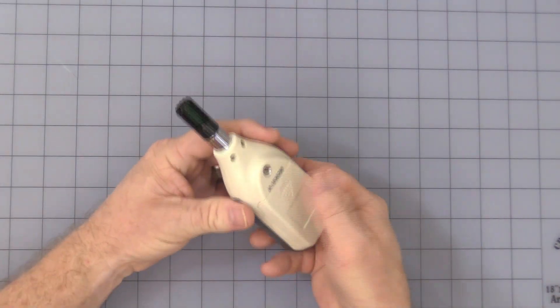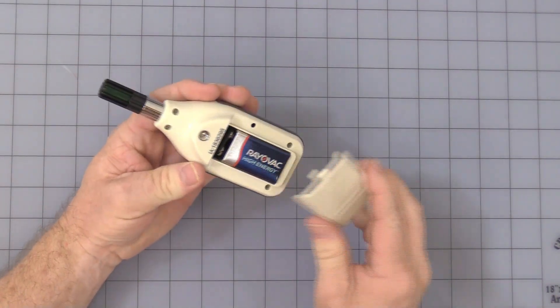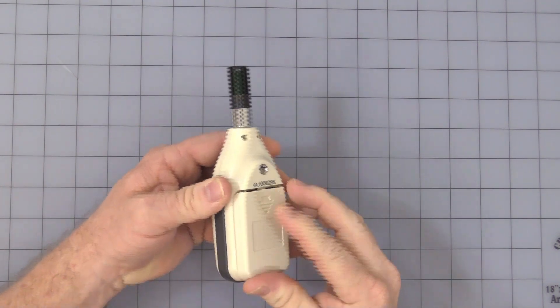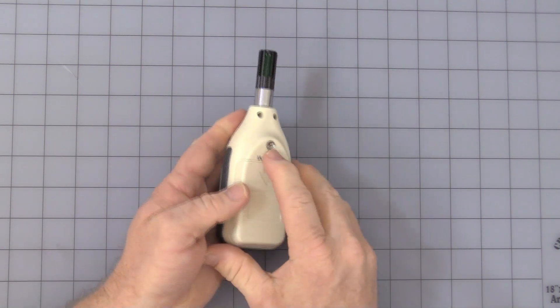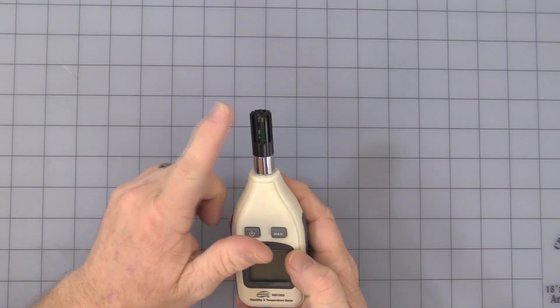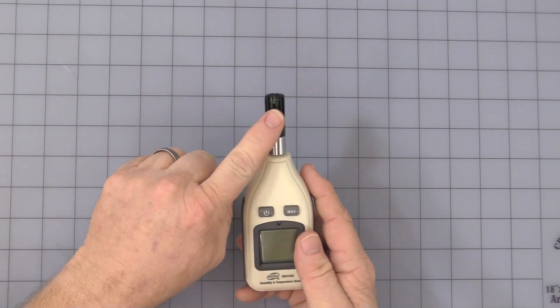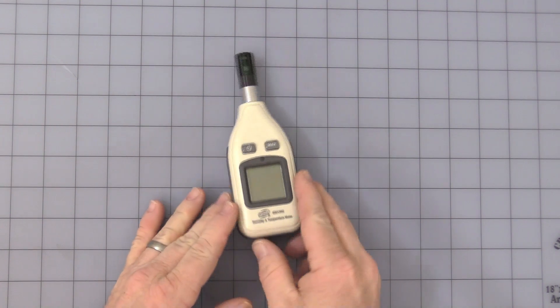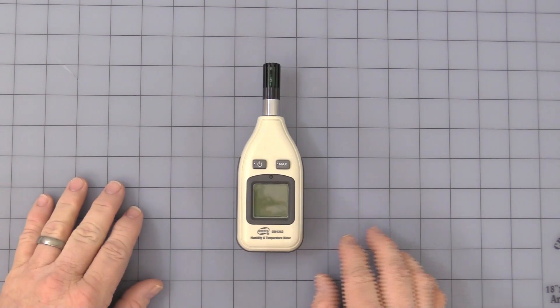I've already gone ahead and installed the battery. Very simple, straightforward. Put it back together. There's a 1/4-20 nut for mounting. That's the sensor itself. It measures directly at the sensor. It doesn't measure at a distance. Let's go ahead and get started on this.